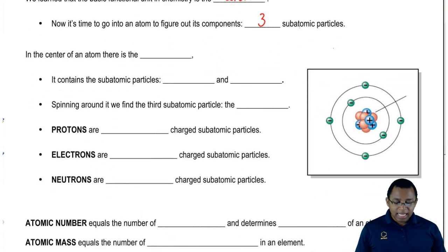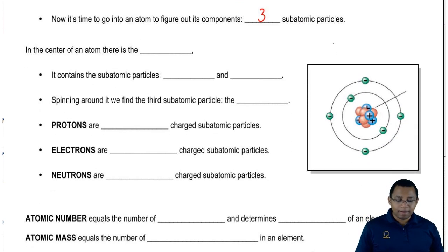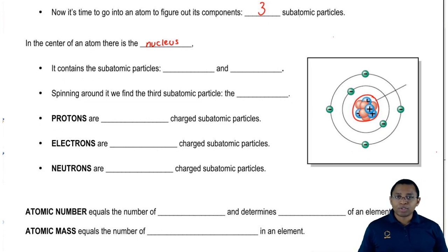In the center of our atom, the very center of our atom, is what we have that's called the nucleus. If we take a look at this illustration on the right, that right there, what I circled is the nucleus.